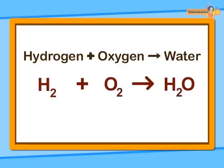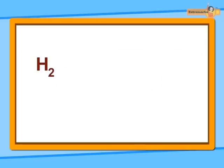Now we can change this word equation into a chemical equation by writing the symbols and formulae of the various substances in place of their names.